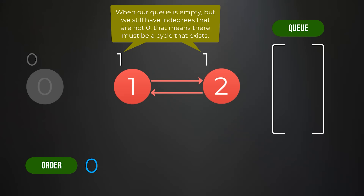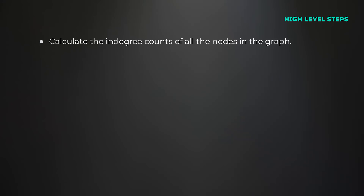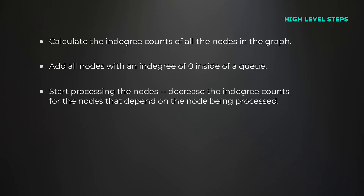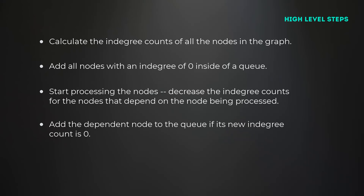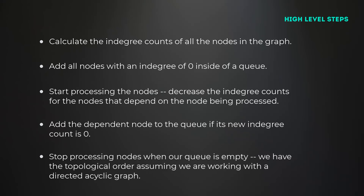This is really important to understand in Kahn's algorithm. To summarize: if our queue ever becomes empty but the indegree counts of all nodes are not 0, that means there must be at least one cycle in the graph. At a high level, here are the steps: first, calculate the indegree counts of all nodes in the directed graph. Then add all nodes with an indegree count of 0 to the queue. Continuously process nodes in the queue — any dependent nodes have their indegree count decreased, and if it reaches 0, that node is added to the queue. Once the queue is empty, assuming no cycles, you will have the topological ordering of all the vertices.